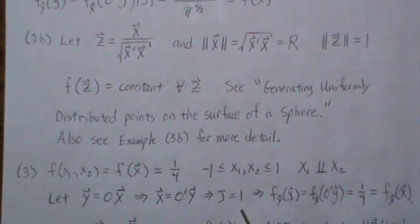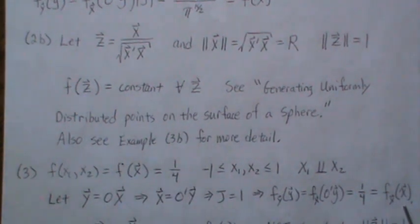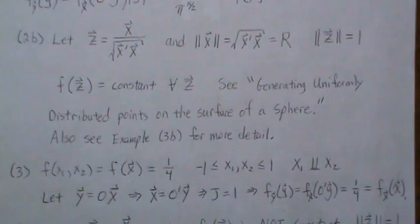Now to find the density of y, we put this substitution in for the x density, which is 1 fourth, and it's the same density. So they are rotationally invariant.